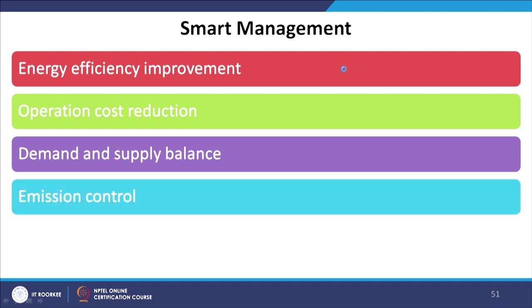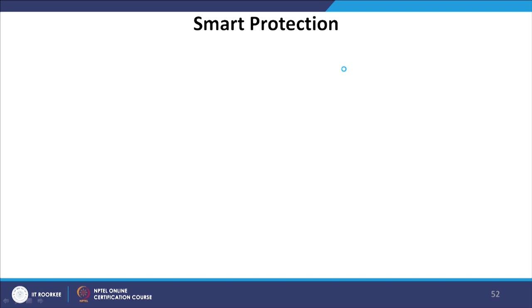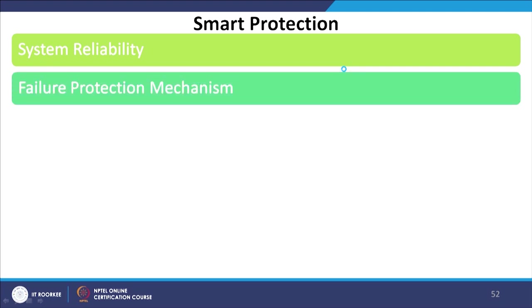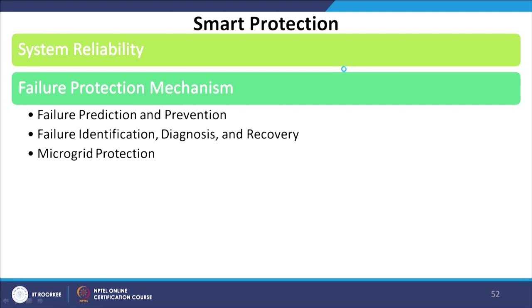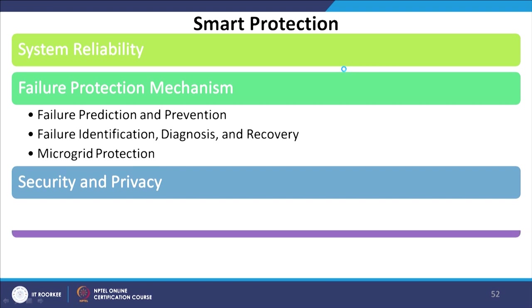Smart management mainly aims to increase energy efficiency, reduce operation cost, balance demand and supply, control emissions, and maximize utility. One more component is smart protection, which achieves system reliability through failure prediction and prevention, failure identification, diagnosis and recovery, and microgrid protection. Security and privacy are also equally important in smart infrastructures.